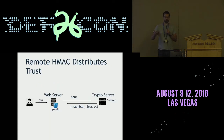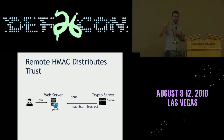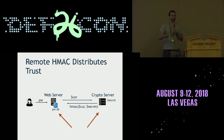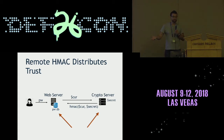At a high level the architecture looks like this: user submits a password, web server does some local processing, connects to the crypto server, crypto server applies and sends it back. The reason we like this architecture is that critical information is now split between at least two different machines. If I break into the web server I get passwords but no key. If I break into the crypto server I get a key but no passwords. This is already better.